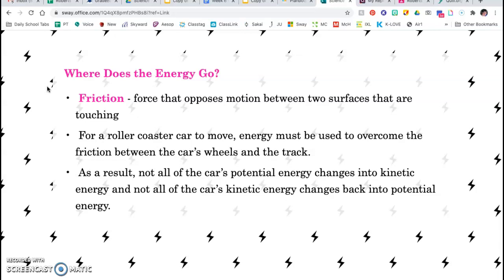Another example: for a roller coaster car to move, energy must be used to overcome the friction between the car's wheels and the track. As a result, not all of the car's potential energy changes into kinetic energy, and not all of the car's kinetic energy changes back into potential energy.